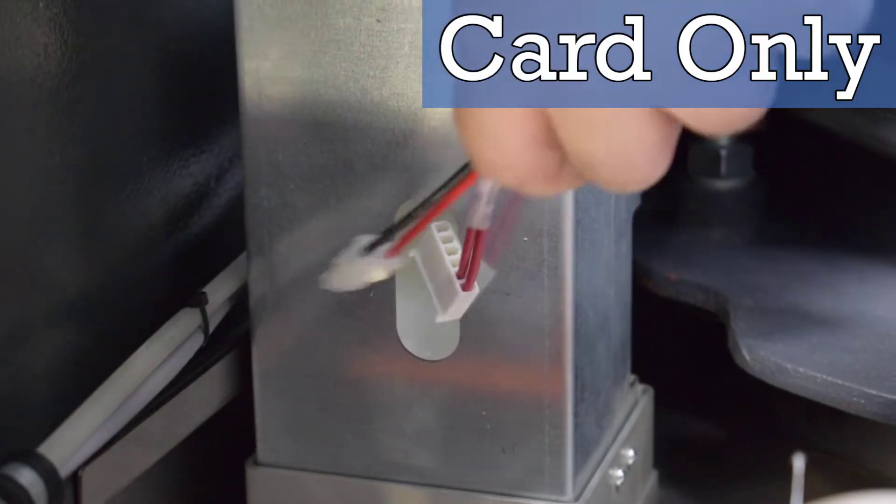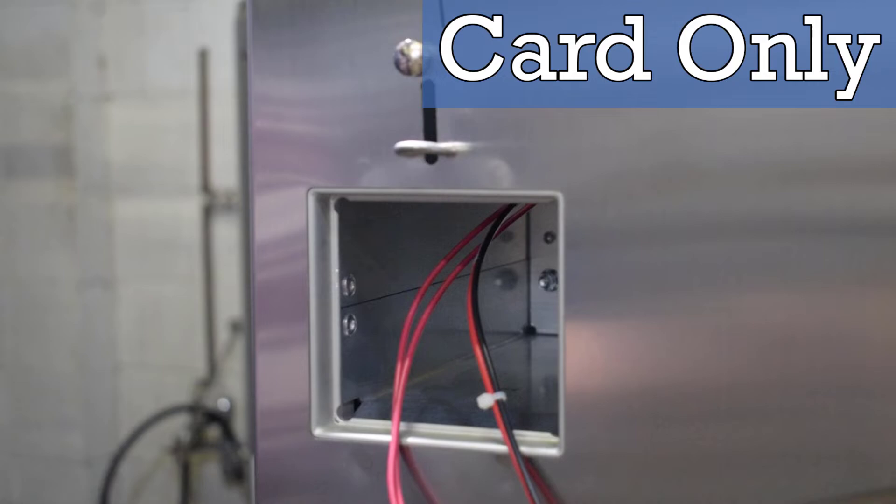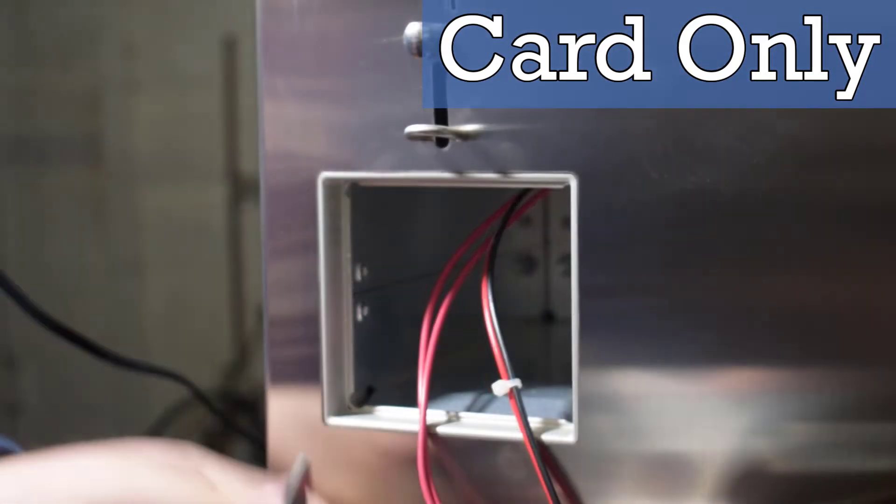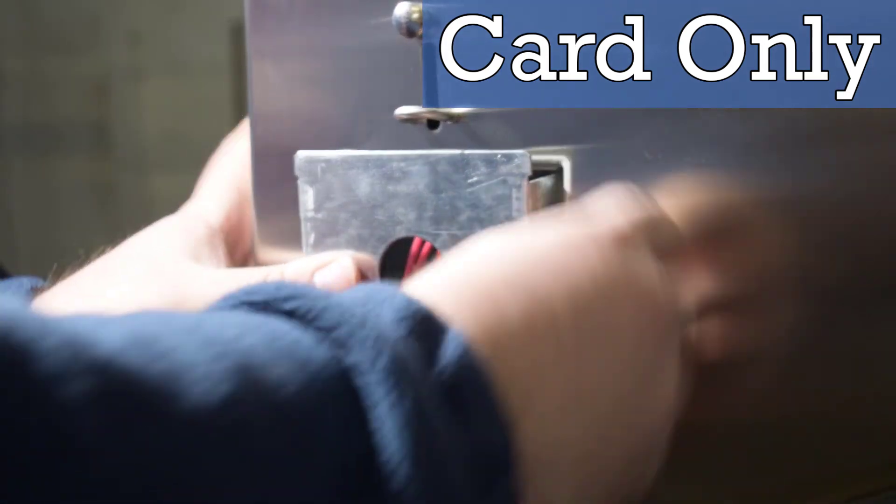But in this card only example, the harnesses are fed through the previous slot where the coin vault was housed. The harnesses would be exposed from the front of the machine and inserted through the center hole of the vault mount.